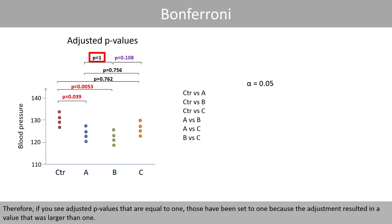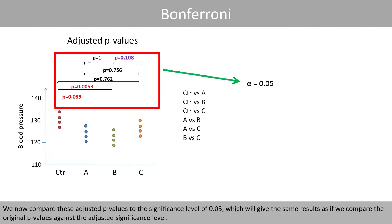Therefore, if you see adjusted p-values that are equal to 1, those have been set to 1 because the adjustment resulted in a value larger than 1. We will now compare these adjusted p-values to the significance level of 0.05, which will give the same results as if we compare the original p-values against the adjusted significance level.